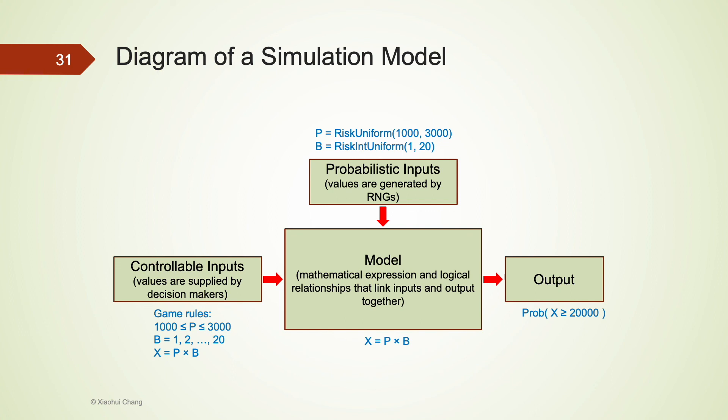For our game show example, the rule of a game, the range of the price, and the range of bonus multiplier are all decided by the game show host. They are controllable inputs, but not random. The outcome of the price, the bonus multipliers are all random and generated by random number generators. Once we have all the inputs, both controllable inputs and probabilistic inputs, the winnings can be calculated by multiplying the price and the bonus multiplier together. Finally, the output of interest is the probability of winning more than $20,000.